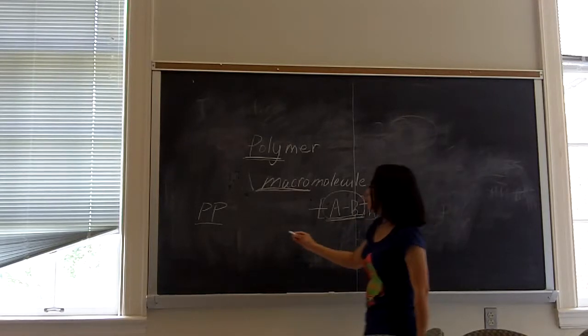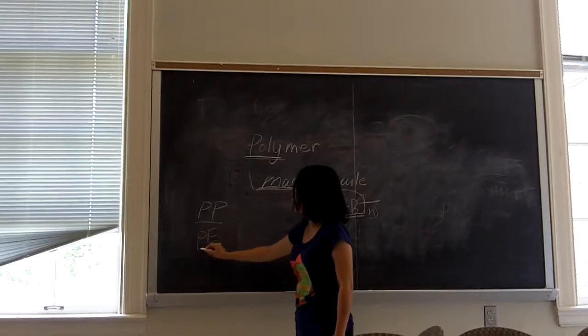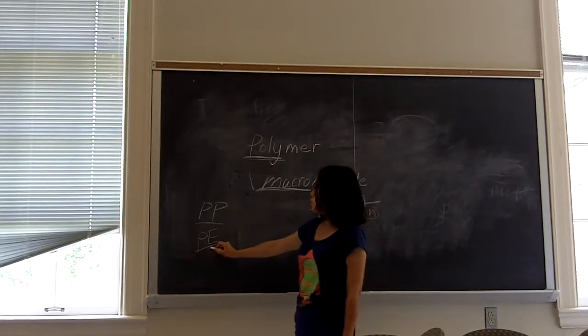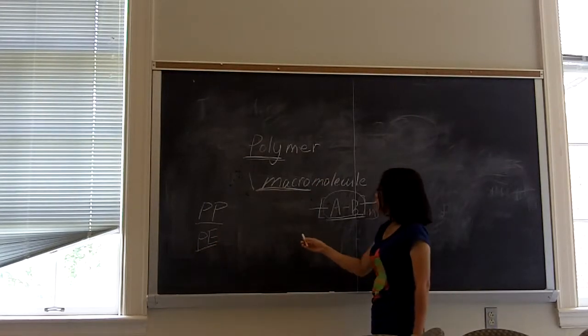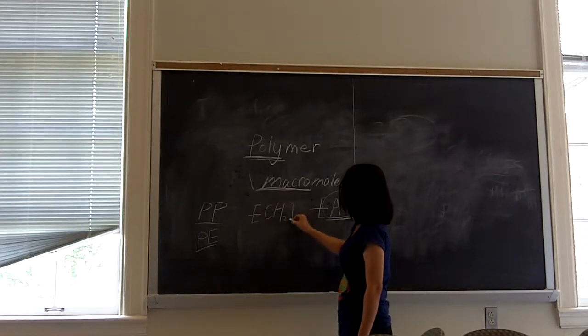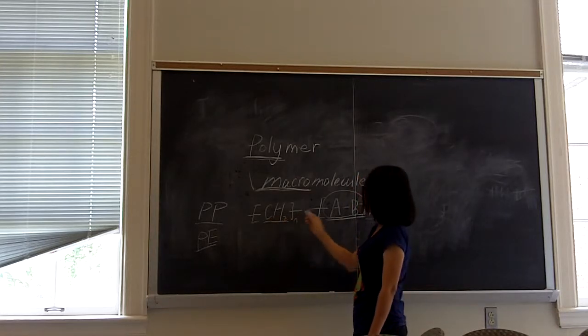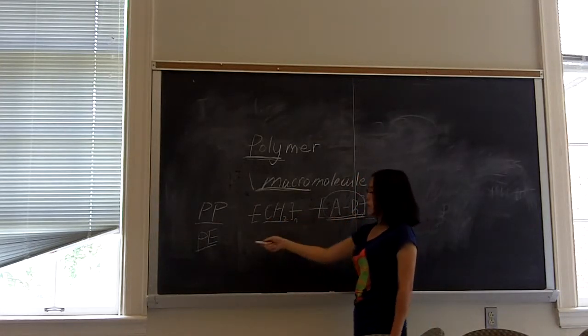So for example, we mentioned PE. This is polyethylene. And the formula for it is like this: (CH2)n. So CH2 is a basic unit in PE.